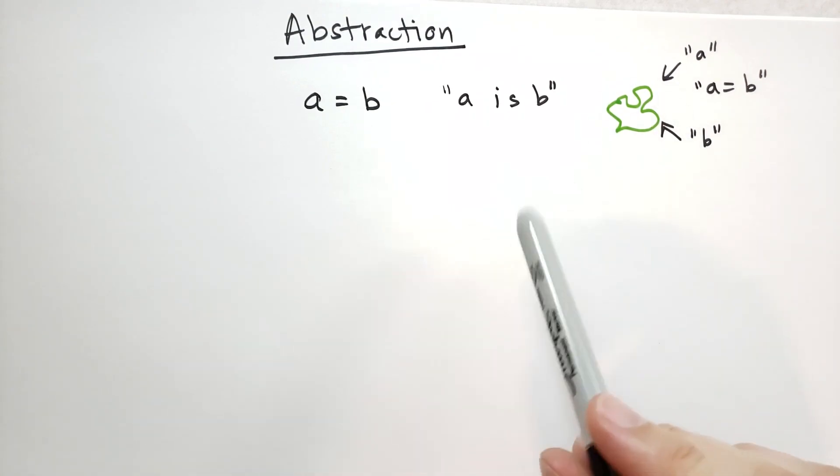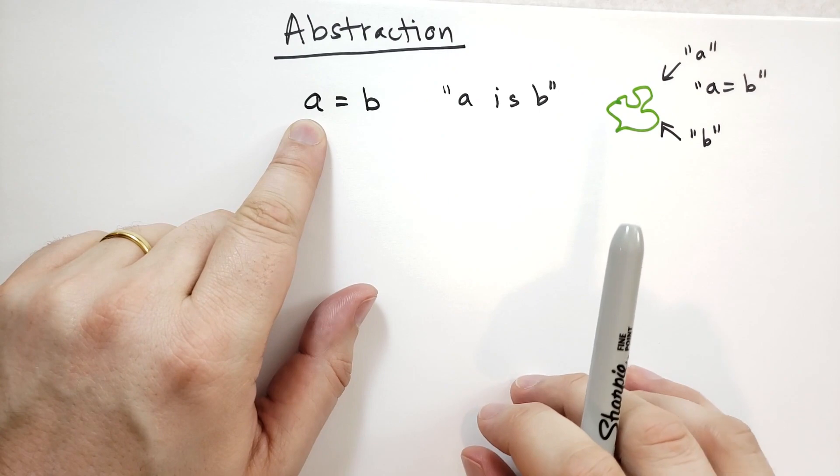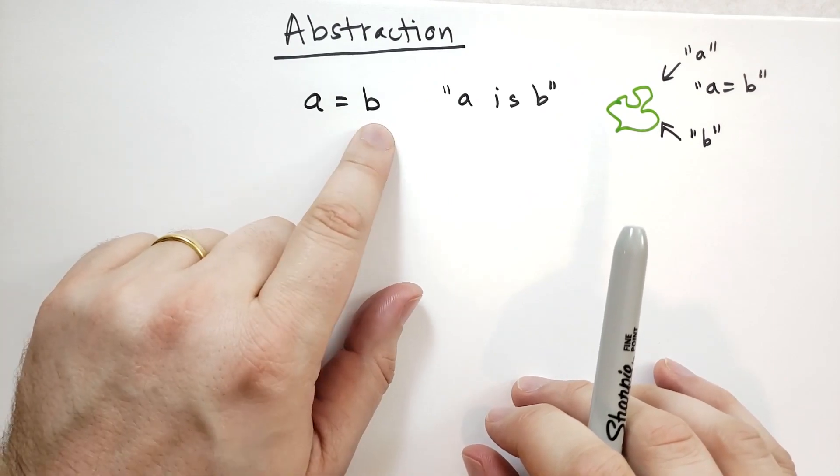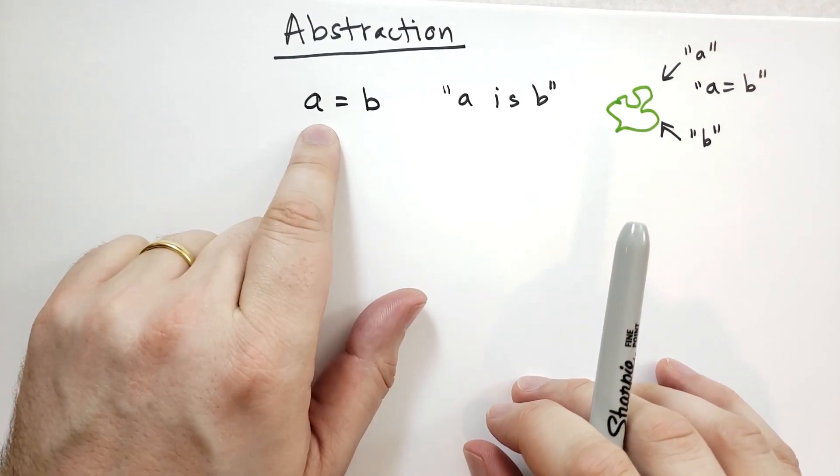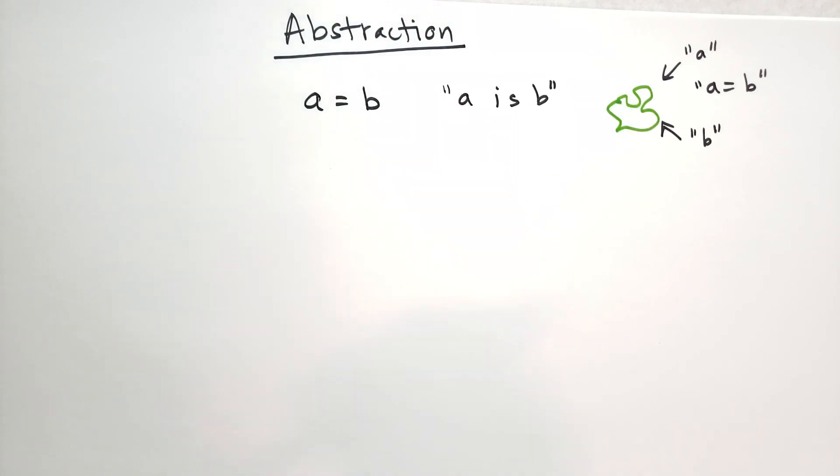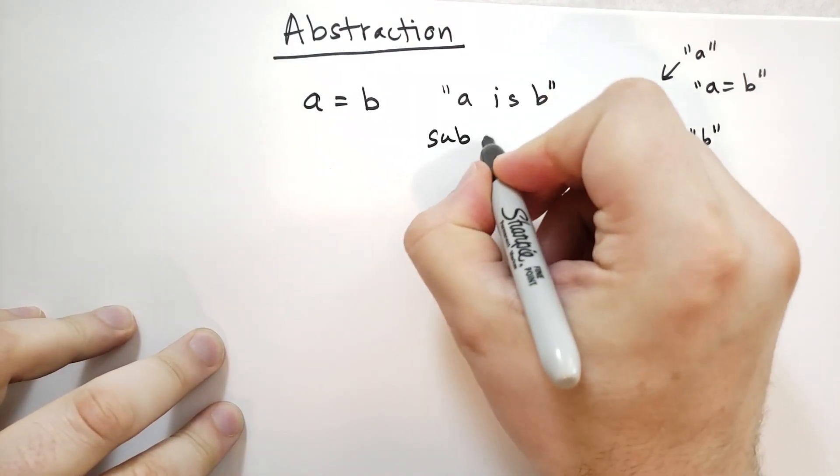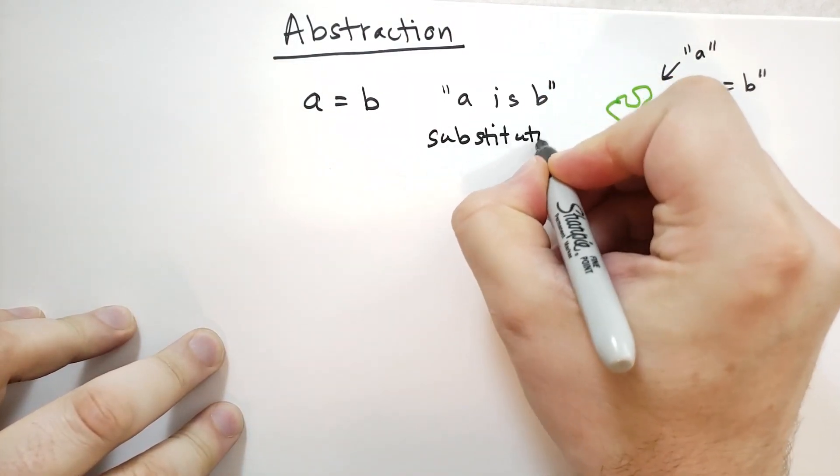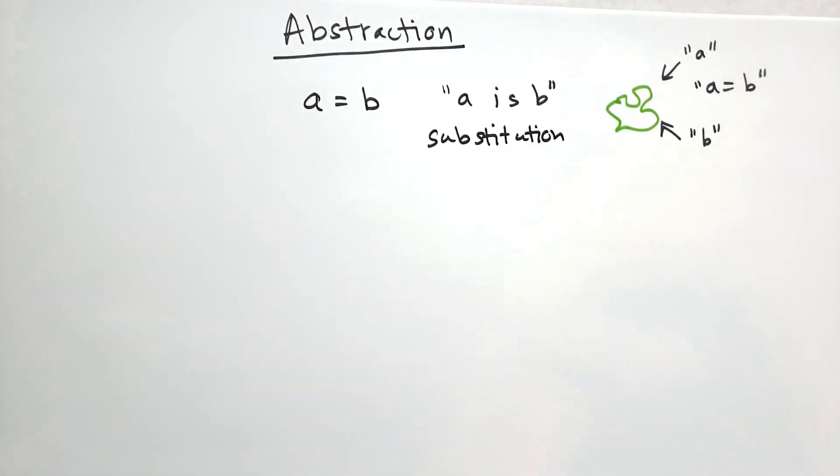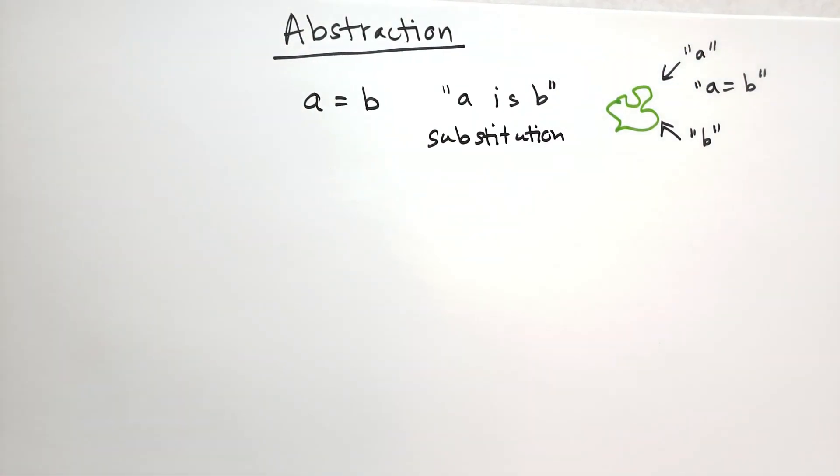Why is this useful? Well, whenever you see a, you can always put b in. And whenever you see b, you can always put a in. So this principle of substitution is very powerful. This is one of the most basic concepts in mathematics and logic.